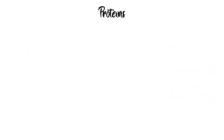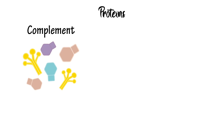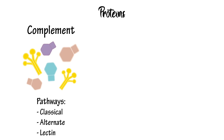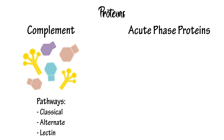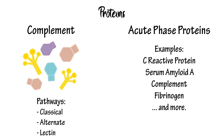In terms of proteins, we have the complement system. This involves three pathways which lead to pathogens being marked for destruction. Levels of other proteins also increase as a result of the initial response.